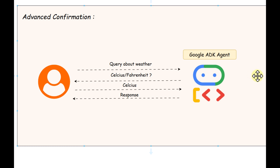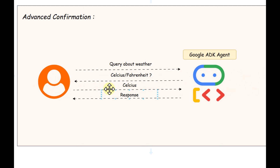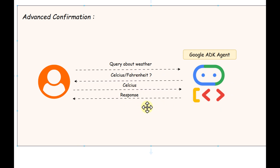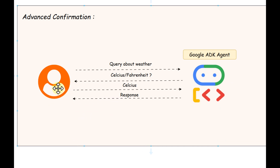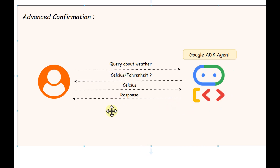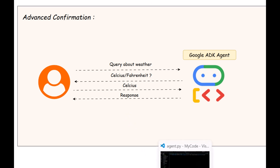Rather than just responding with weather information, the agent is going to ask in which format the temperature should be displayed — whether Celsius or Fahrenheit. The user can pass their preference, and based on that the agent will provide the response. So instead of just responding with true or false, the user is going to pass a certain payload and based on that the agent gives a response.